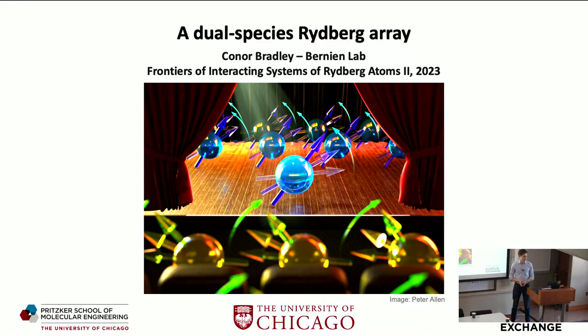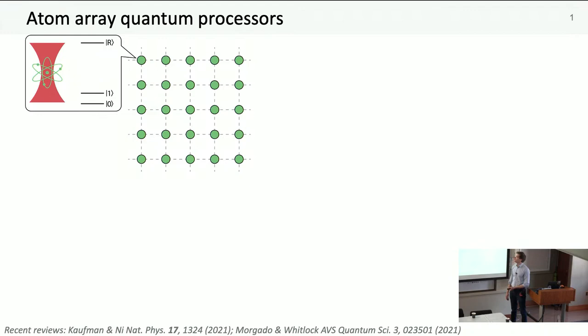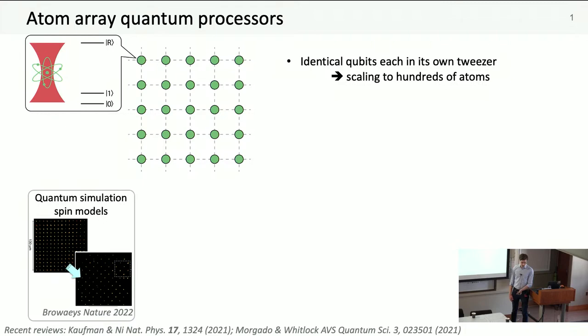So it's really great to be here. I'm very grateful to the organizers for giving me the chance to tell you about some of the work we've been doing in the Bernian lab, particularly on this dual species atom array and where we're going with that.